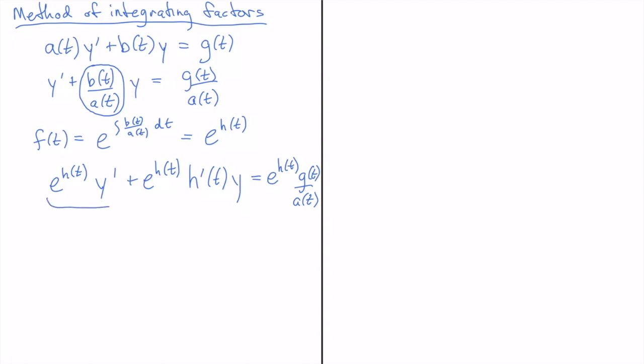And now this piece here is the result of a product rule. So if you want more on that you can check out that other video. But here I'm just going to write this down as a backwards step through the product rule. This entire expression here on the left hand side is the same as the derivative of e to the h of t times y.